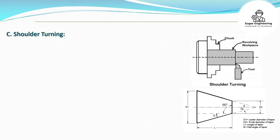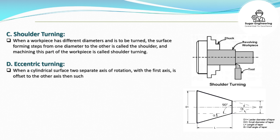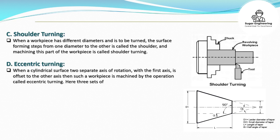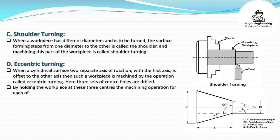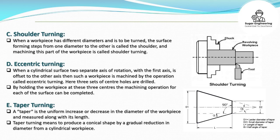In shoulder turning, when a workpiece has different diameters, the surface forming steps from one diameter to the other is called the shoulder, and machining this part is called shoulder turning. In eccentric turning, when a cylindrical surface has two separate axes of rotation and one axis is offset to the other, three sets of center holes are drilled and the workpiece is machined at each center. Taper turning produces a conical shape by a gradual reduction in diameter along the length of a cylindrical workpiece.